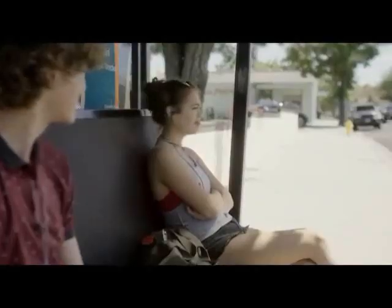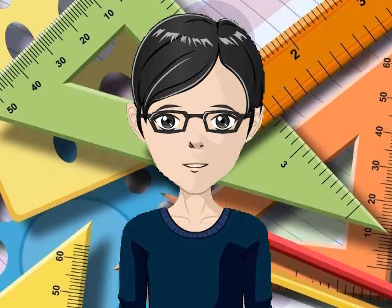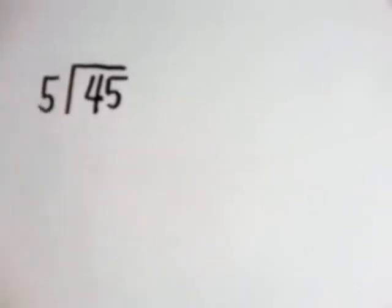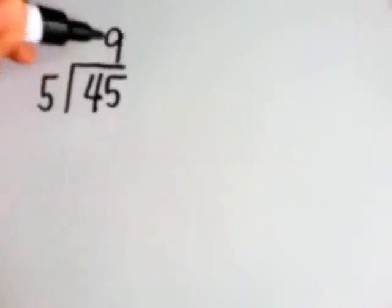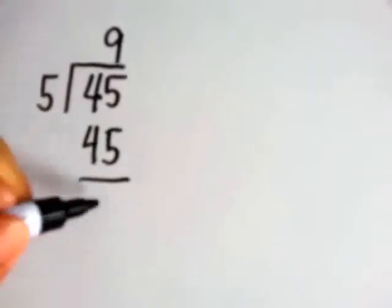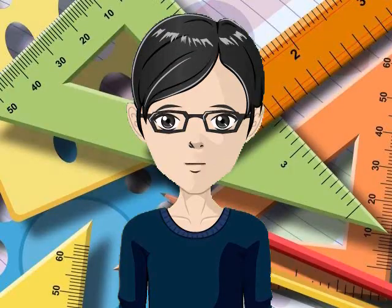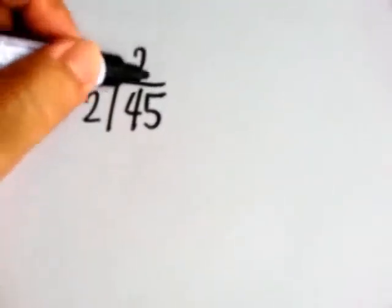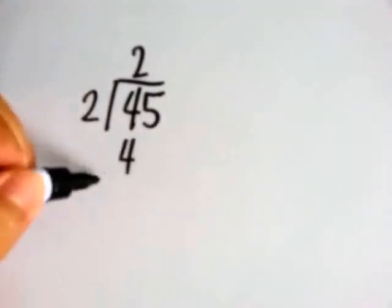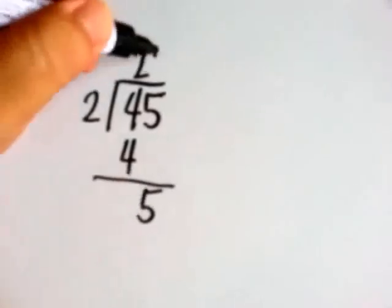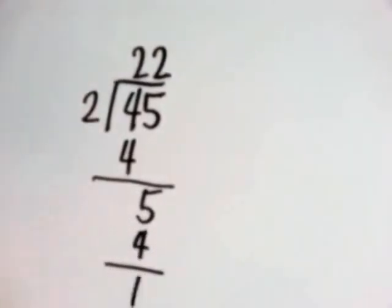So tell me, is 45 divisible by 5? It is, kasi 45 divided by 5 equals 9 at walang remainder. But is 45 divisible by 2? It is not, kasi 45 divided by 2 equals 22 remainder 1.